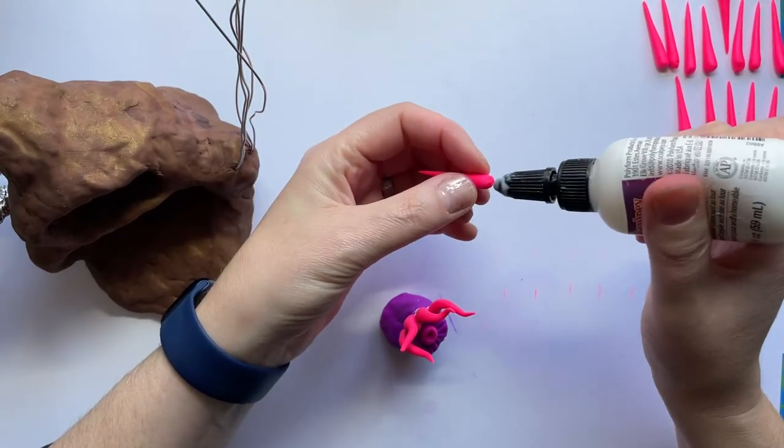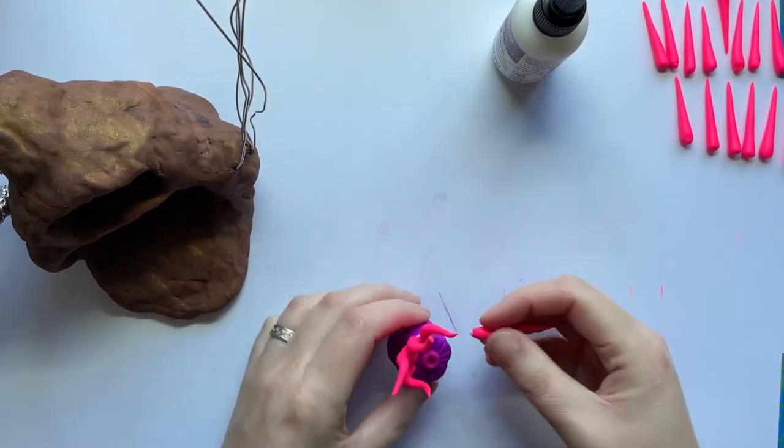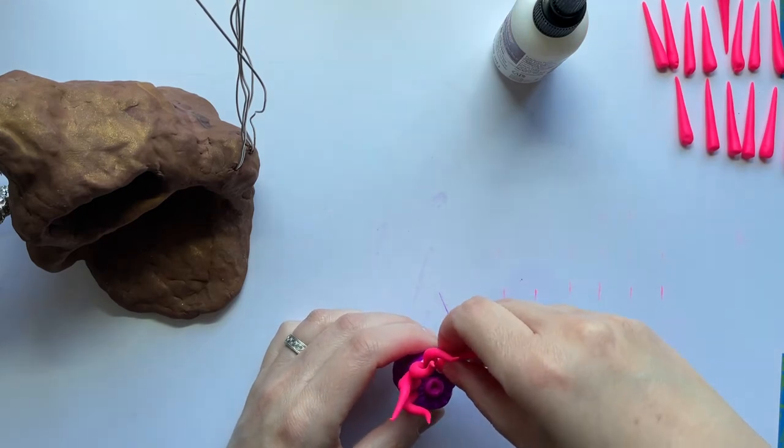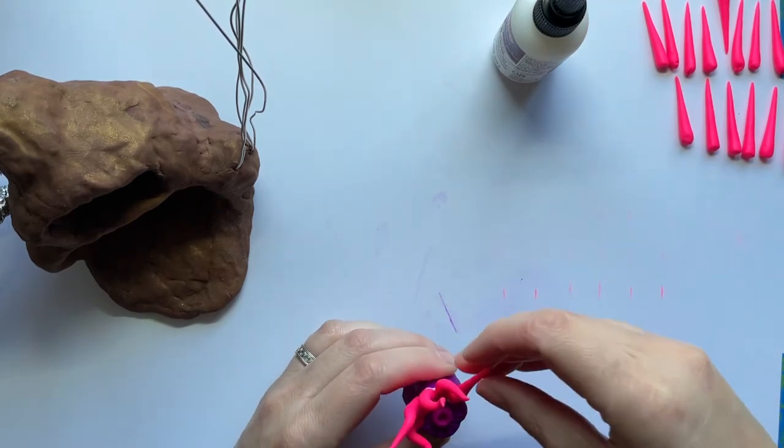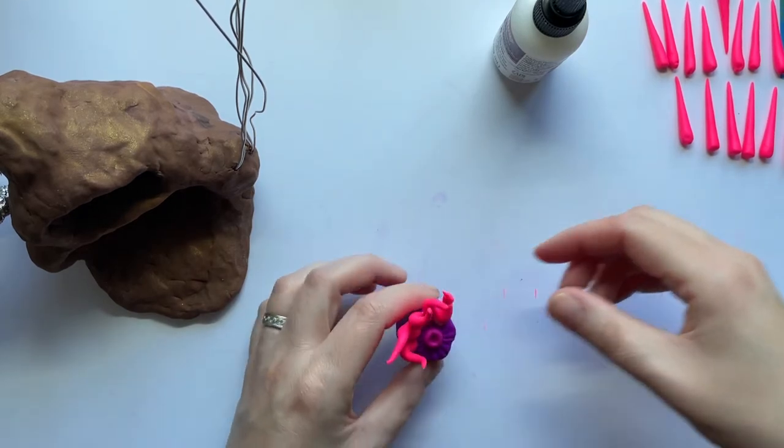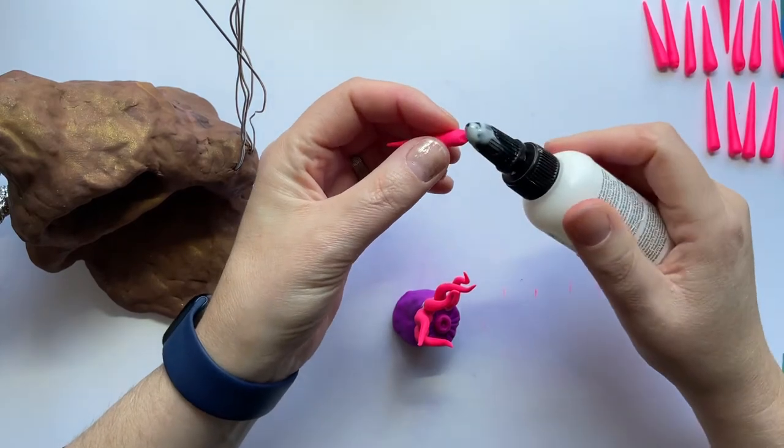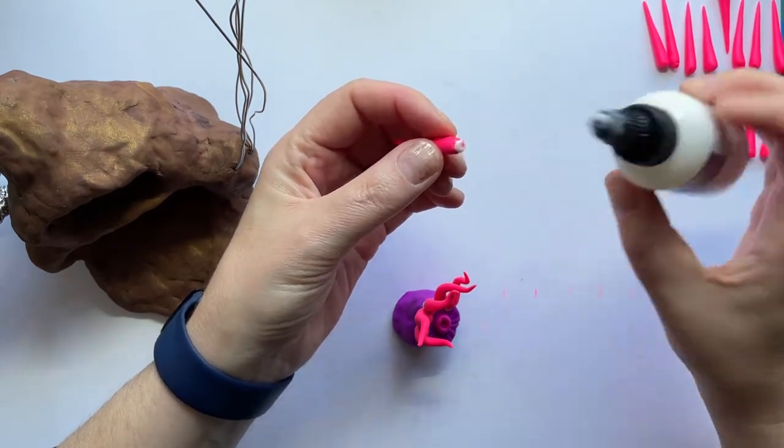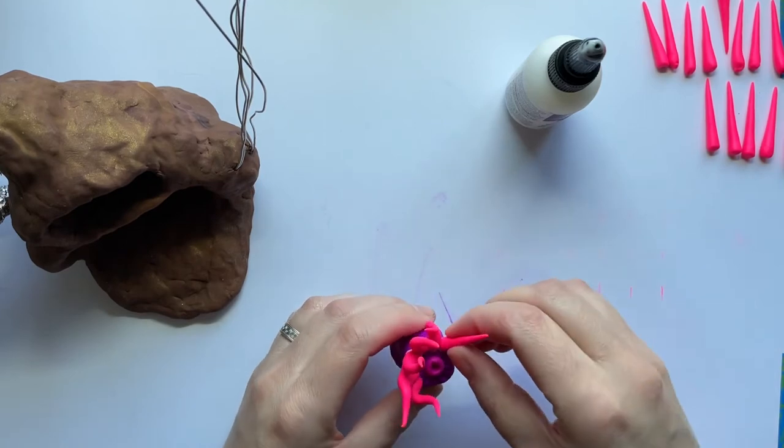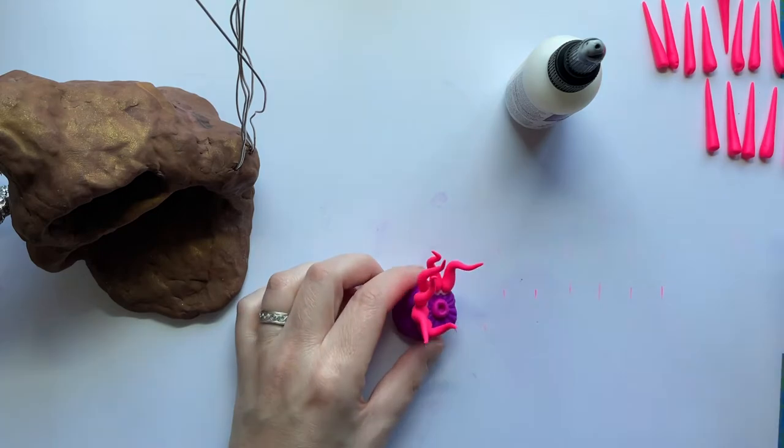So you're gonna go all the way around the top and like I said, depending on the size of your sea anemone, you're gonna want at least two rows but possibly three rows depending on what you want it to ultimately look like and how big it is. So let me get this first row on and then I'll show you the second row.